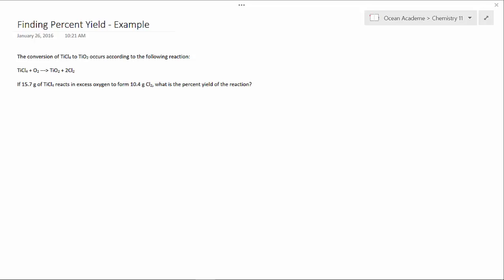First, we need to determine our limiting reagent and our excess. And how we do that is we compare moles. So we're given 15.7 grams of TiCl4 and we're given 10.4 grams of Cl2. So we need to convert these to moles.